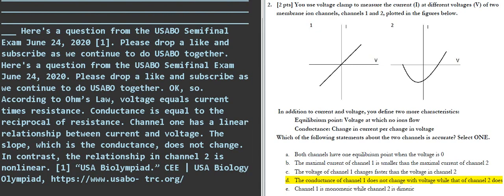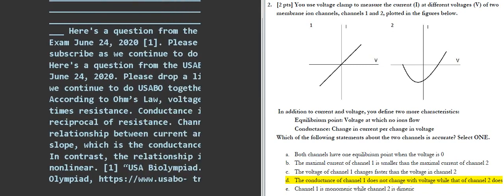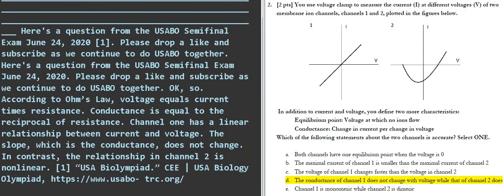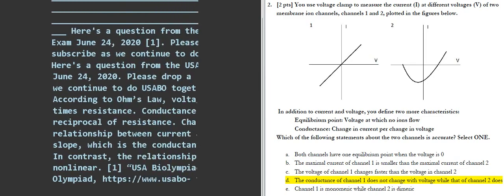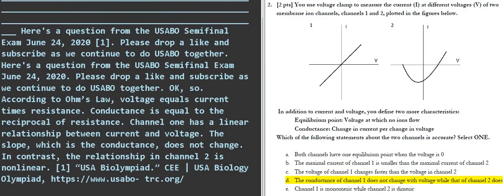Conductance is equal to the reciprocal of resistance. Channel 1 has a linear relationship between current and voltage — the slope, which is the conductance, does not change. In contrast, the relationship in channel 2 is non-linear.